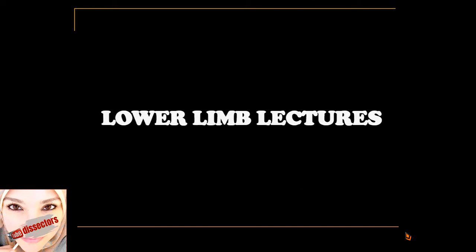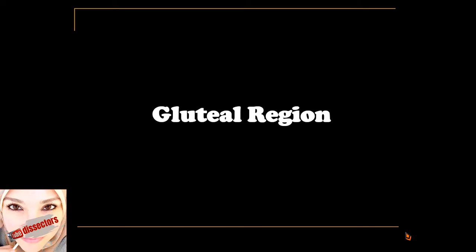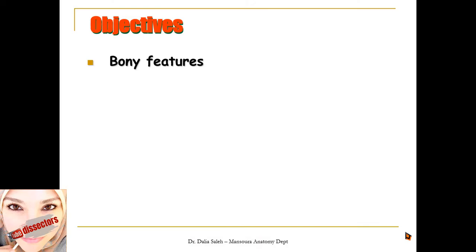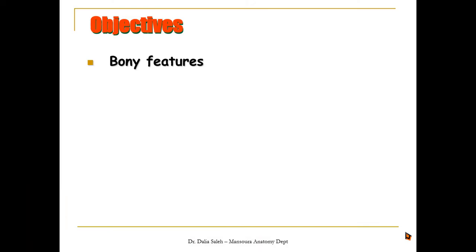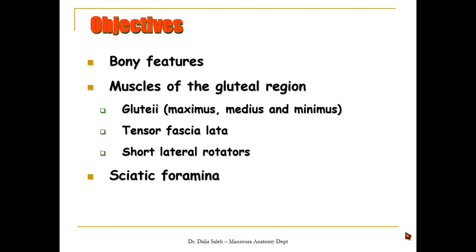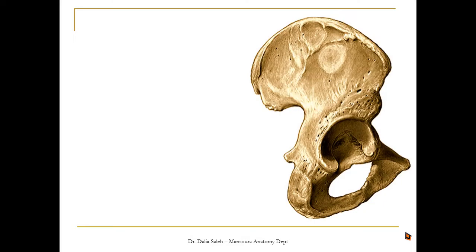Assalamu alaikum warahmatullahi wabarakatuh. To carry on with the lower limb lectures, I'm going to cover in this presentation the anatomy of the gluteal region. I'm Dr. Dalia Saleh, professor and head of the anatomy department at Mansoura University. First, let's revise some bony features of this region, then I'll talk about the muscles of the gluteal region — the glutei muscles, the tensor fasciae latae, and the short lateral rotators — and then the greater and lesser sciatic foramina including their boundaries and contents.